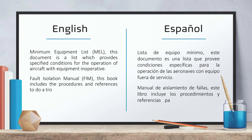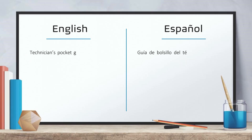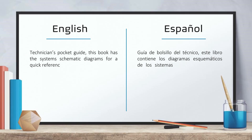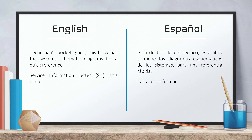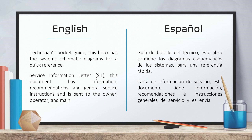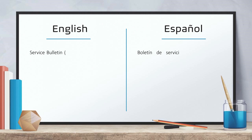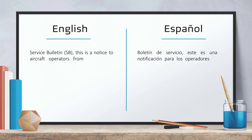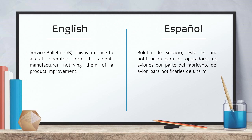Fault isolation manual — this book includes the procedures and references to do troubleshooting. Technician's pocket guide — this book has the system's schematic diagrams for a quick reference. Service information letter — this document has information, recommendations and general service instructions and is sent to the owner, operator and maintenance personnel. Service bulletin — this is a notice to aircraft operators from the aircraft manufacturer, notifying them of a product improvement.